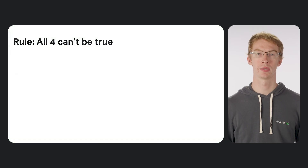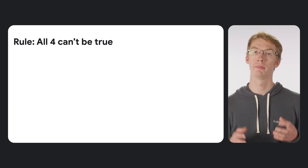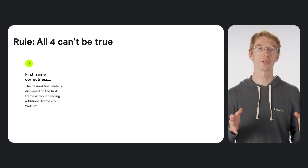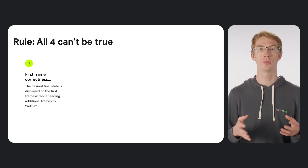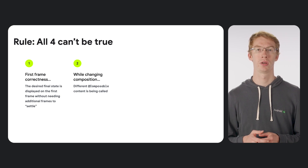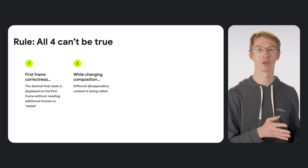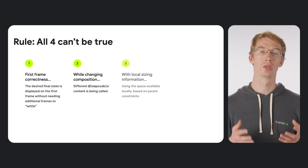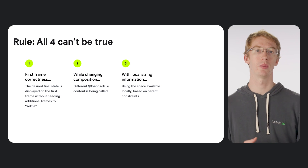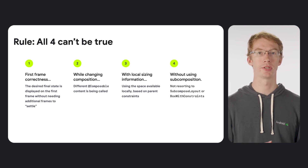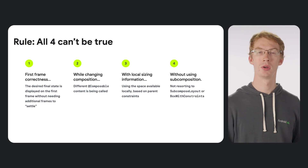When building adaptive layouts, there are four things you often want to do in code to get a desired behavior. Unfortunately, these four things are all desirable but they can't all be true together because of how the Compose phases work. The first is first frame correctness — the desired state of your UI is correct on the first frame without needing additional frames to settle. The second is changing what's in composition, like choosing between a navigation rail or a navigation bar. The third is local sizing information — making choices based on how much space is available at a specific point in the UI hierarchy. The fourth is avoiding subcomposition, like with SubcomposeLayout and BoxWithConstraints.